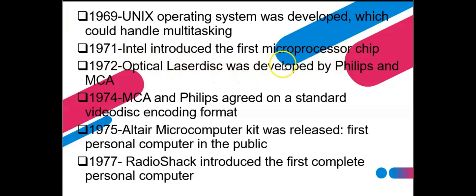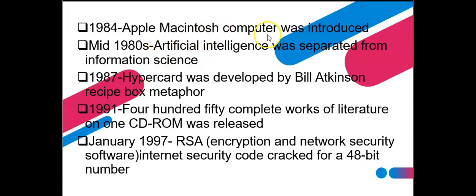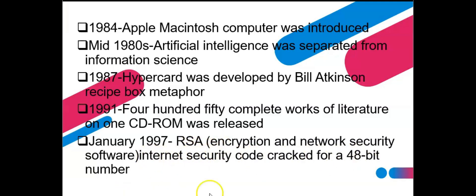In 1972, the optical laser disk was developed by Philips and MCA. In 1974, both Philips and MCA agreed on a standard video disc coding format. In 1975, after the microprocessor kit was released, Radio Shack introduced the first complete personal computer in 1977. In 1984, the Apple Macintosh computer was introduced. In 1980, artificial intelligence was separated from information science. In 1987, HyperCard was developed by Bill Atkinson. By January 1997, RSA encryption using a 48-bit number code was cracked.